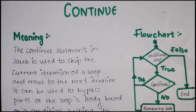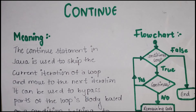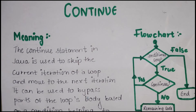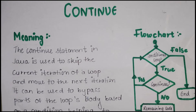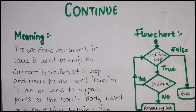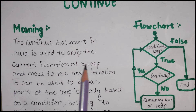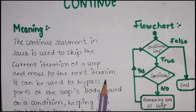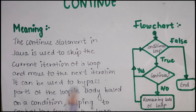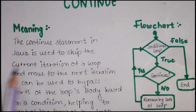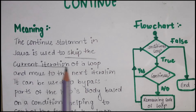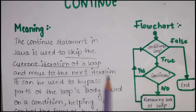Continue is used in loops. If we have to continue an iteration in loops, then we use the continue statement. The continue statement in Java is used to skip the current iteration of a loop and move to the next iteration. It can be used to bypass part of a loop's body based on a condition, helping to control the flow of the loop.